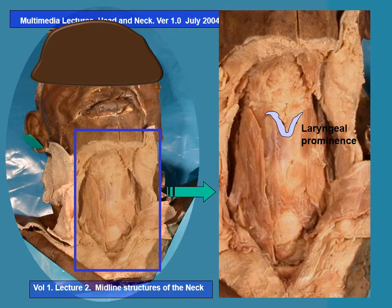The next structure is the laryngeal prominence. The upper border of the thyroid cartilage as it moves towards the midline forms that prominence — the laryngeal prominence, known in layman's terms as the Adam's apple. Further down is the angle of the thyroid cartilage, which is why these two are shown in continuity with each other.